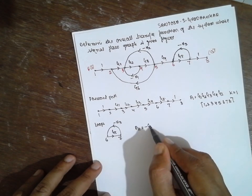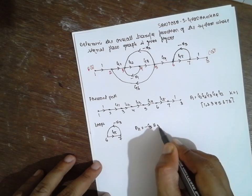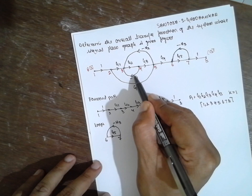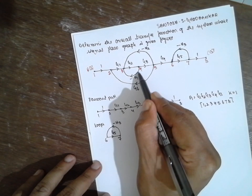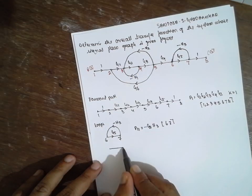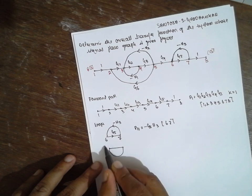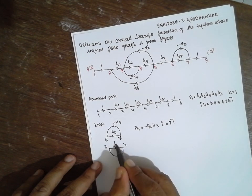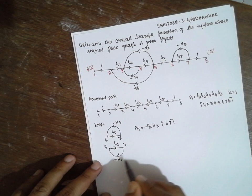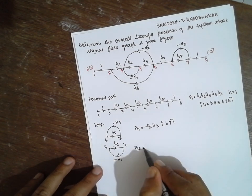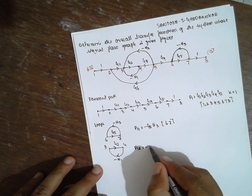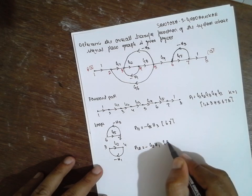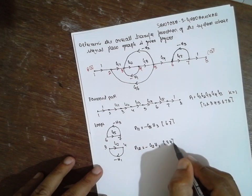The next loop involves nodes 2, 3, 4, 5, and back to 2 — it starts here and ends here. The gains along this loop are G2 and H1. Therefore, P12 is equal to minus G2 · H1.